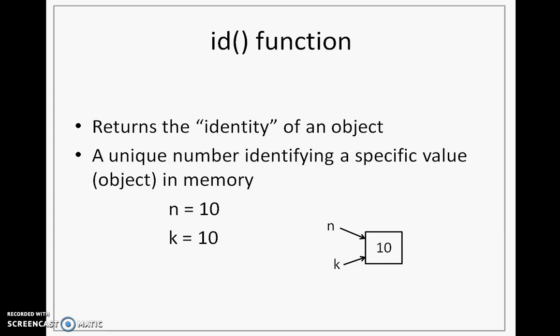Now, to understand how these values are created and how variables refer to them, there is a very useful function called the ID function. The ID function returns the identity of an object. What is an identity? It is a unique number identifying a specific value. These specific values you can also call objects in memory.